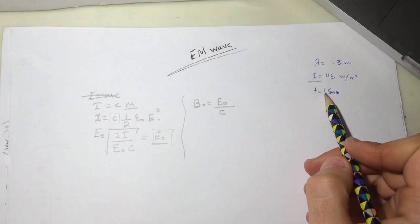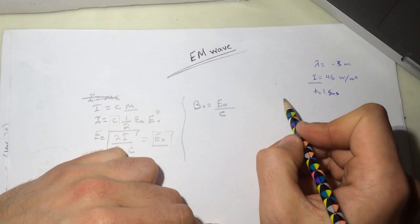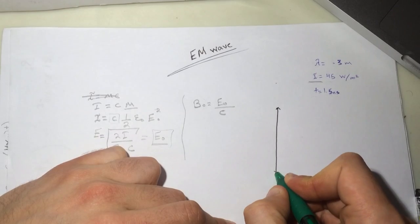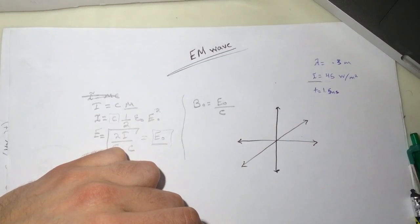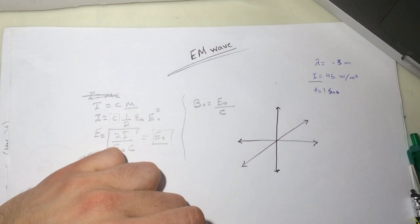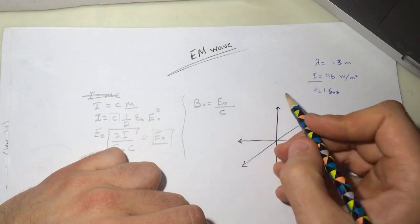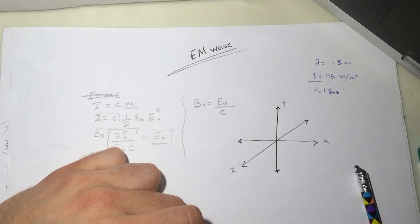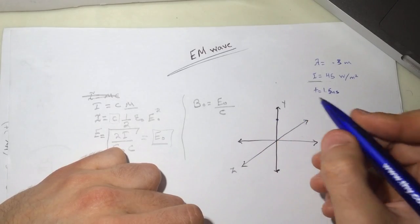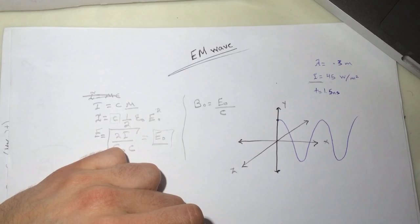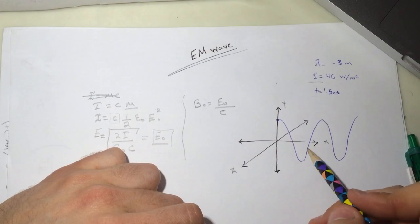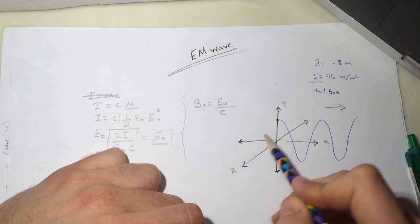They want us to find the field at time equal to 1.5 nanoseconds. They told us the electric field is maximum at t=0 and points along the positive y-axis. So let's set up coordinates: y, x, and z. The wave starts from the positive y direction and travels in the positive x direction.